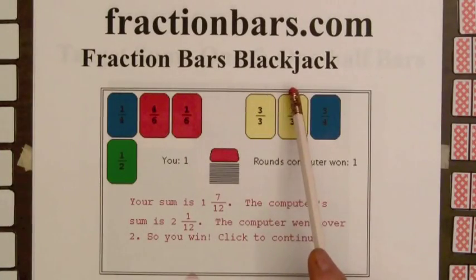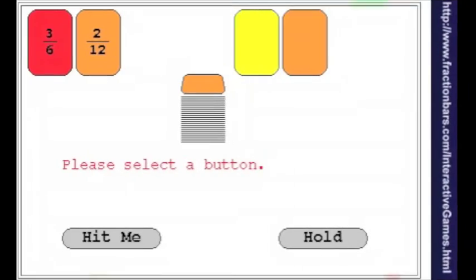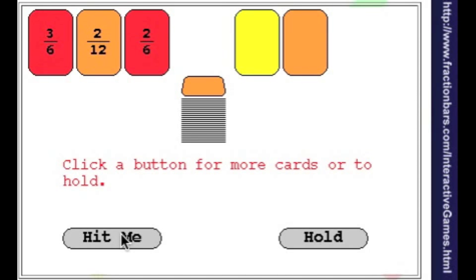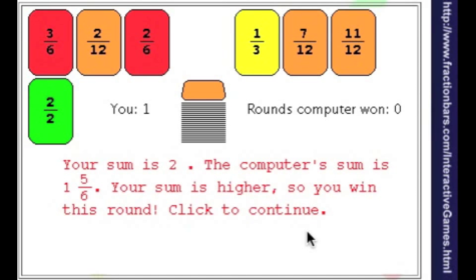Fraction Bars Blackjack is also on FractionBars.com. In this game, the player turns over two fraction playing cards. The object is to get a sum as close as possible to two without going over. A pencil and paper may be needed to compute these sums. The player competes against the computer, and the greater sum, that is not over two, wins the round.